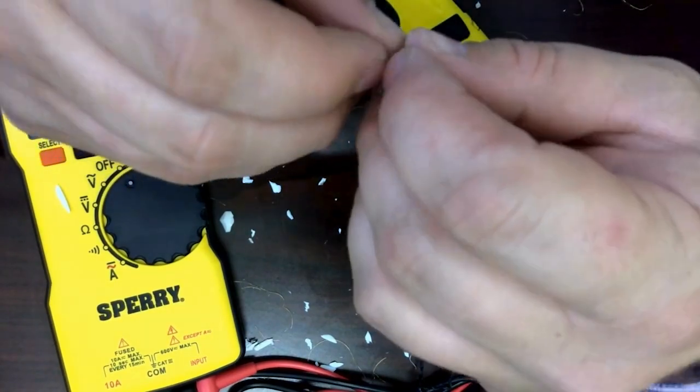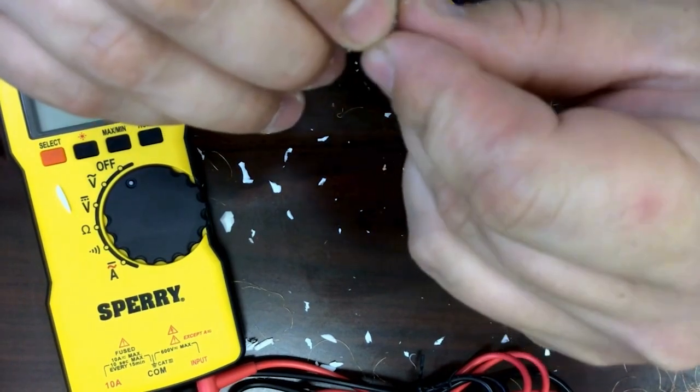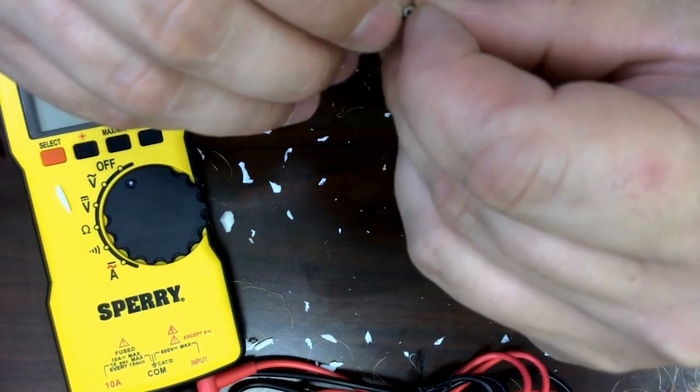What we'll do once we have it out is we are going to put the multimeter to the transponder itself and see if the transponder carries any charge or power source.